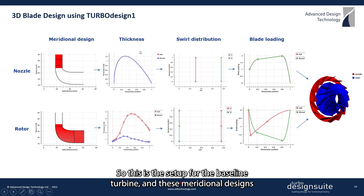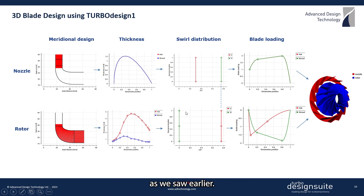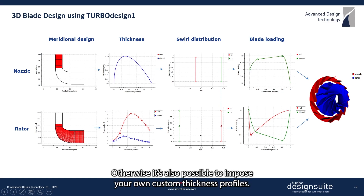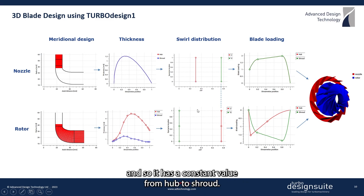This is the setup for the baseline turbine. The meridional designs and all these different settings all come from the mean line code as we saw earlier. It is also possible to impose your own custom thickness profiles. The spanwise work distribution for each component is pre-vortex, so it has a constant value from hub to shroud.